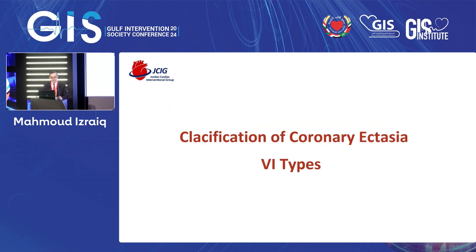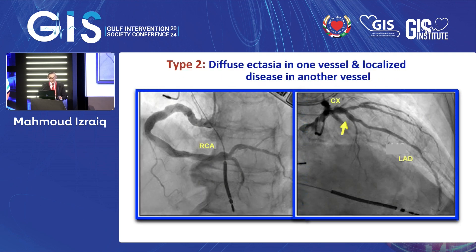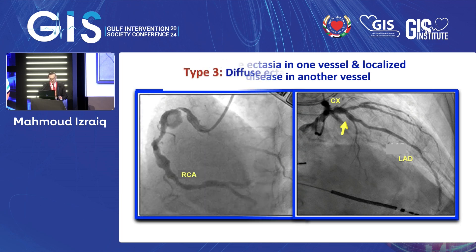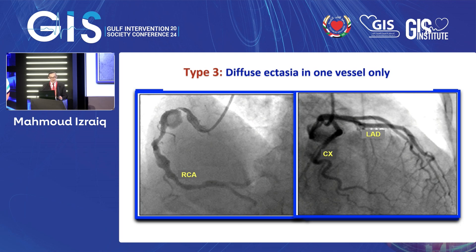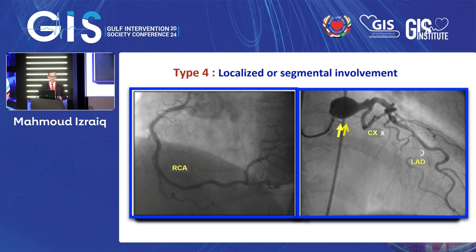Classification of coronary ectasia: Type 1 is diffuse ectasia of two or three vessels. Type 2 is diffuse ectasia in one vessel and localized disease in another vessel — for example, RCA with localized involvement in the proximal LAD. Type 3 is diffuse ectasia in one vessel only. Type 4 is localized or segmental involvement, defined as less than one third of the length of the vessel.